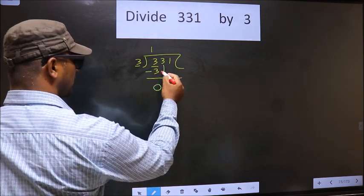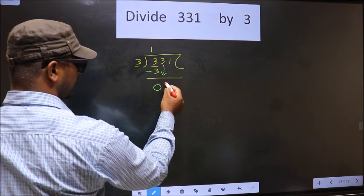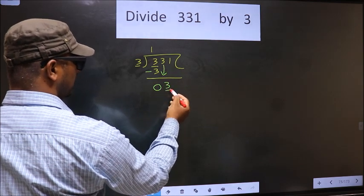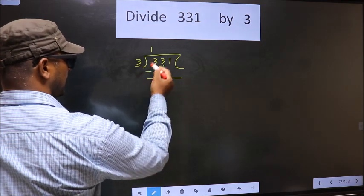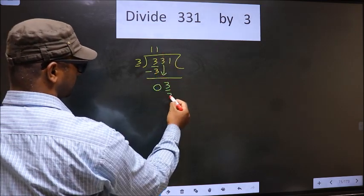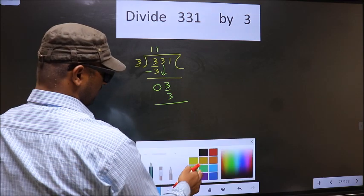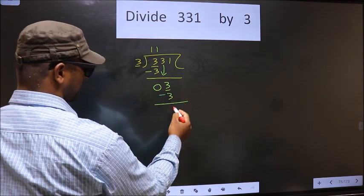Now you bring down the beside number, 3 down. Now here we have 3, here also 3. When do we get 3 in the 3 table? 3 times 1 is 3. Now you subtract. 3 minus 3 is 0.